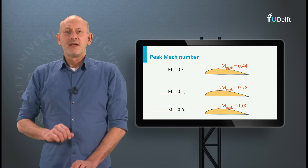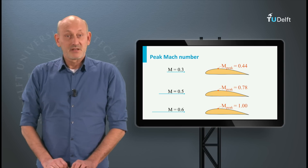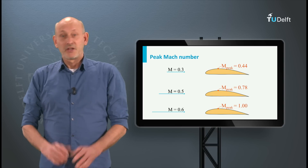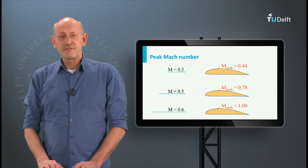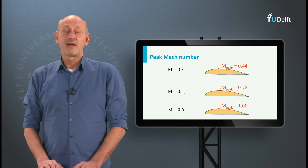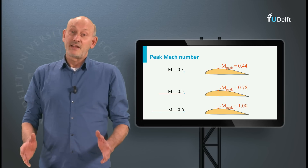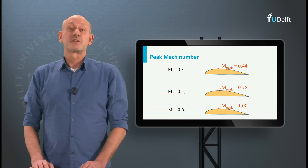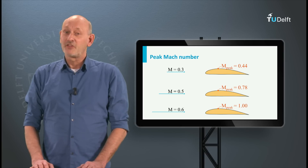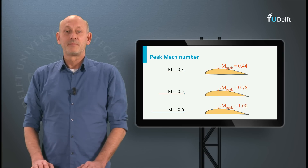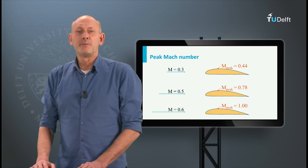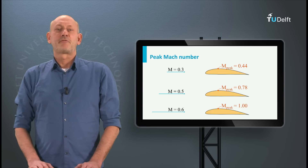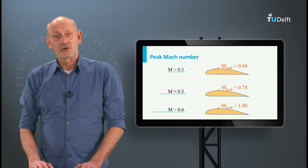The associated minimum pressure coefficient is called the critical pressure coefficient. Please note that this is just an example. Another airfoil with a different shape at a different angle of attack will likely have a different critical Mach number and at a different location on the airfoil. A comparable graph can be made for one airfoil at different lift coefficients.